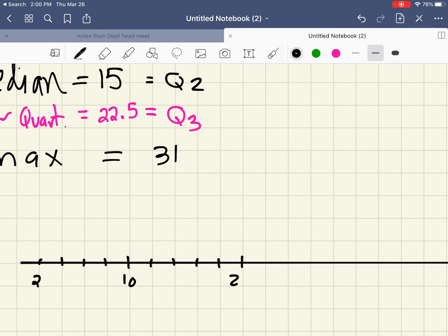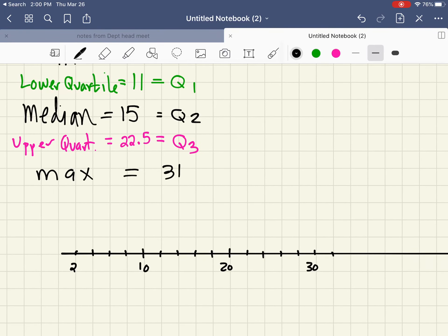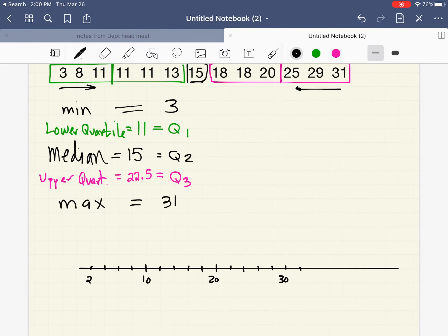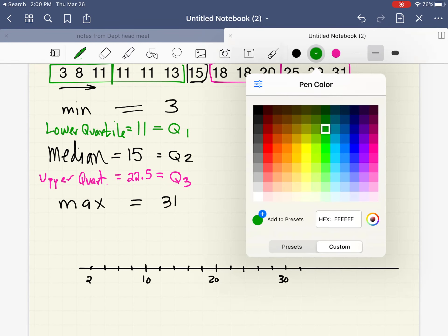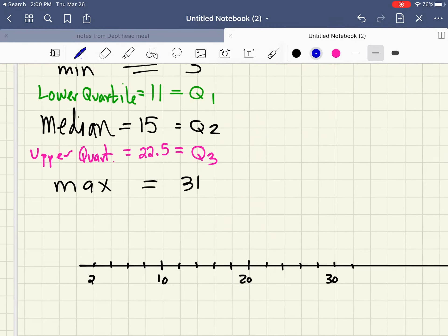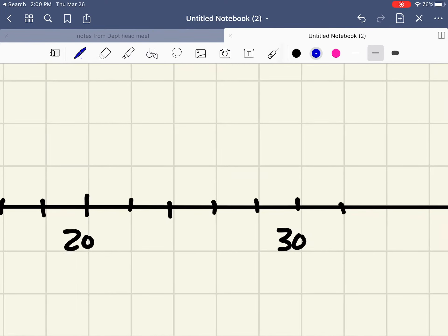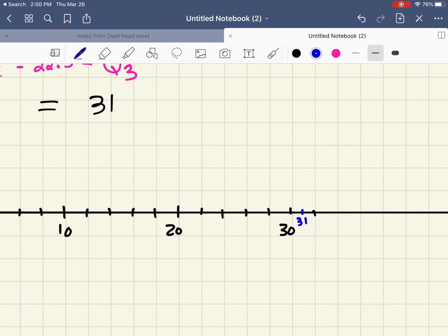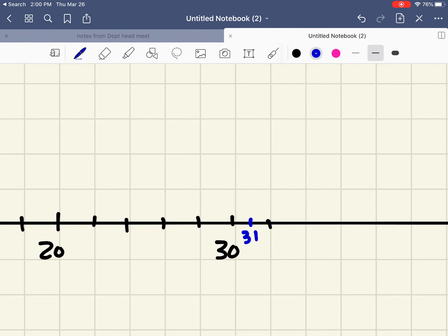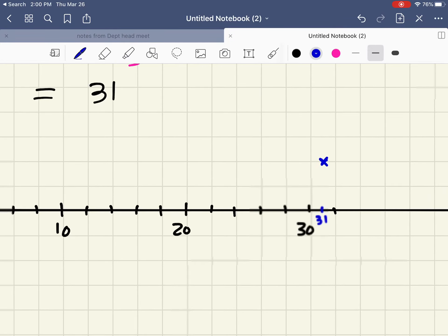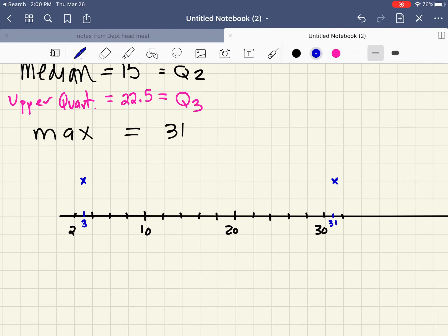2, 4, 6, 8, 10—I don't have to label every single line—12, 14, 16, 18, 20, and that would be 30, and there's 32. The first thing I'm going to do is mark my minimum and my maximum. My minimum happens here at 3, and above 3 I'm going to put a little X or dot, and also here at 31 at the same height.